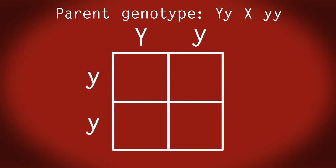So these are the parents' genotypes. And these are going to be the possible offspring genotypes. Let's fill in the gaps. I'll do the first one for you. Dominant Y and recessive y gives Yy.